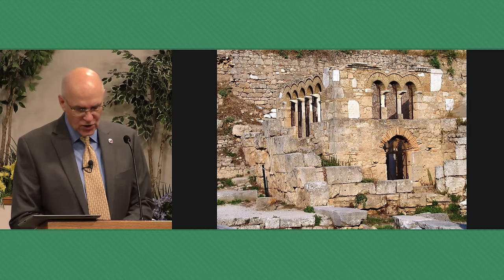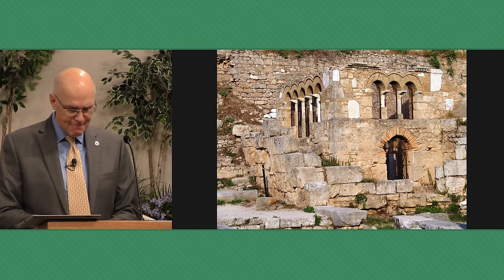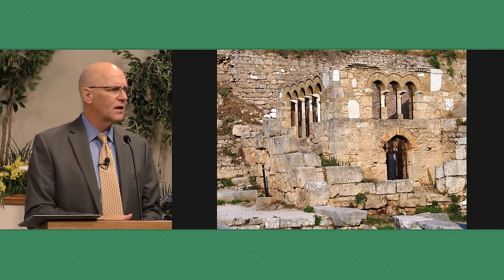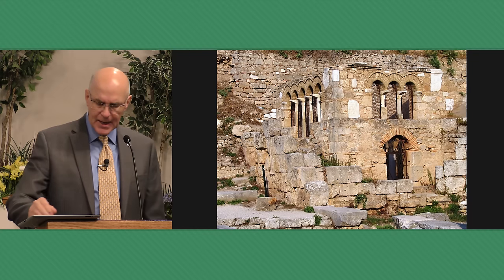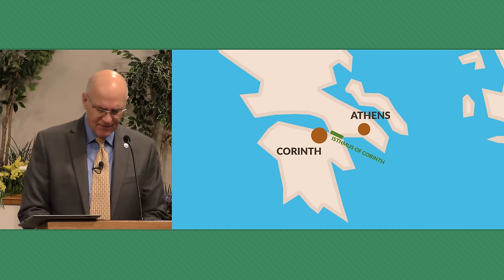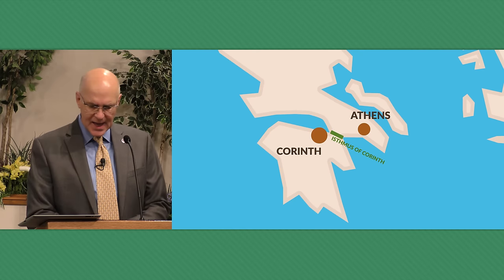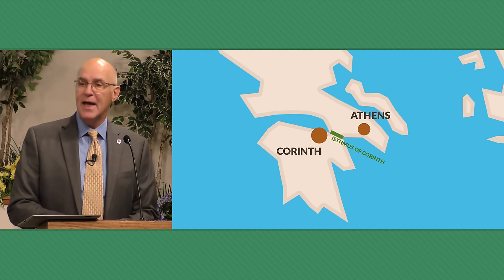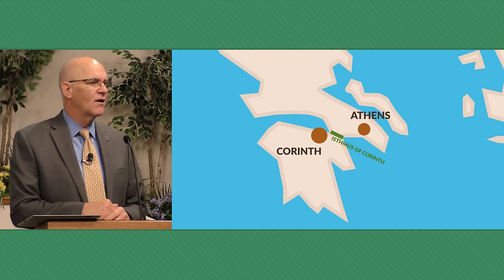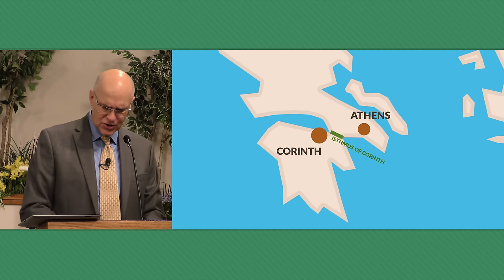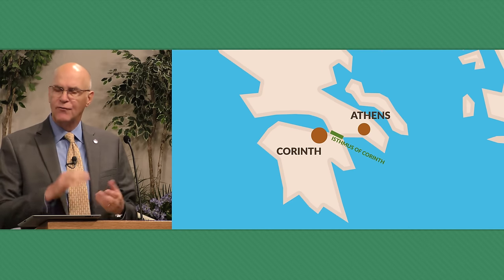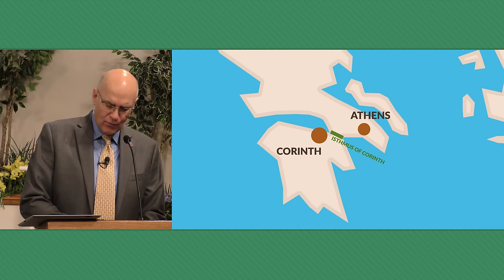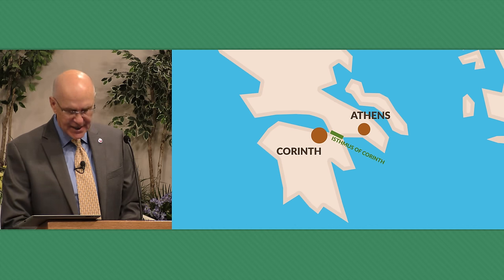It eventually became the fourth largest city in the Roman Empire, with a population of about 600,000 people — an enormous city for that time. It was well suited for trade and commerce because of its three seaports and its location on the isthmus between northern and southern Greece. It became the Roman capital of the Greek district of Achaia. Because of its location, it drew a mixed population of Greeks, Romans, Egyptians, and Jews who all came to trade and do business. Corinth was a wealthy city given to commerce, art, and entertainment.